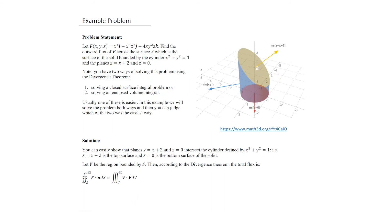Now let's look at an example problem. The vector field has a given form, and we want to find the outward flux of F across surface S — the surface of the solid bounded by the cylinder x² + y² = 1, cut off by two planes: z = x + 2 (the top slanted plane) and z = 0 (the xy-plane). The cylinder extends between these two planes.